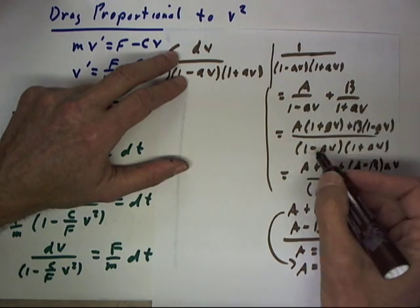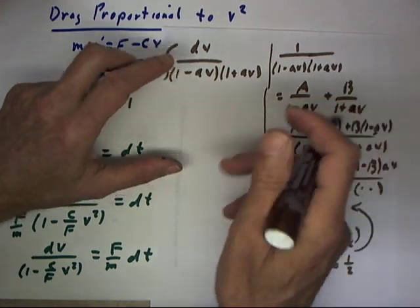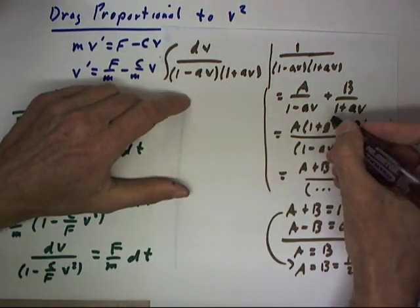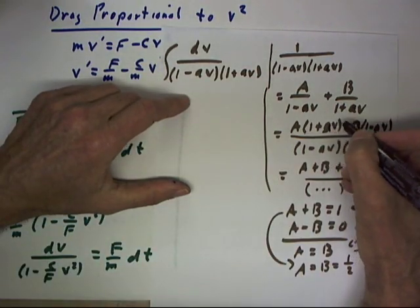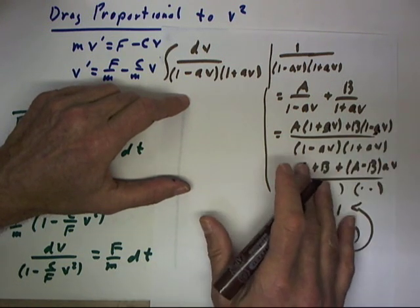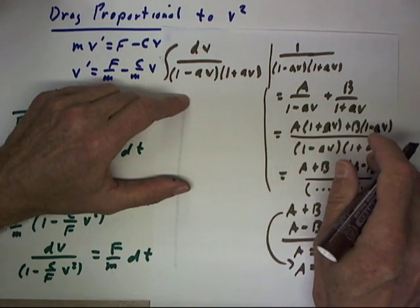Now, we place these over the common denominator, which is the product of the two denominators. That's fairly easily done. We have A times 1 plus av and B times 1 minus av over the denominator.